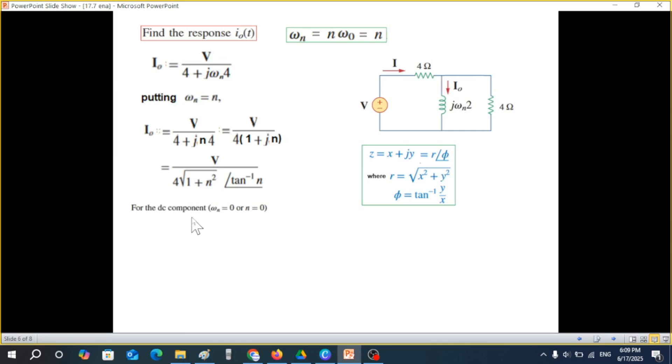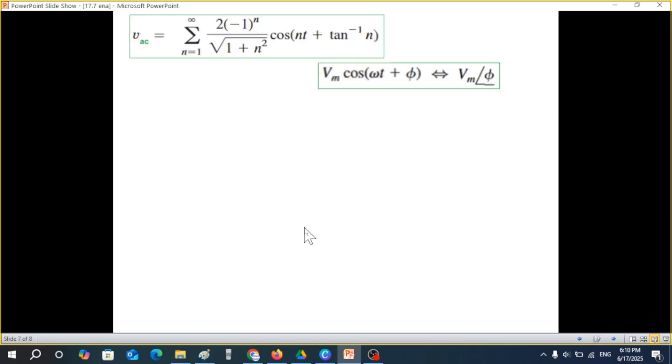Now for DC component, ωₙ is 0, that means n is 0. So if we put n here 0, then IDC will be V over 4. We had already found VDC to be 1 volt. So IDC will be 1/4 ampere. Now we'll find IAC.